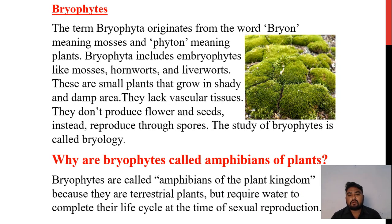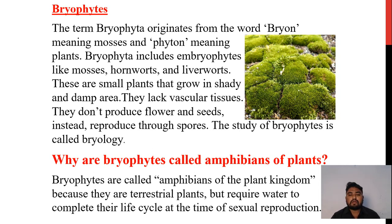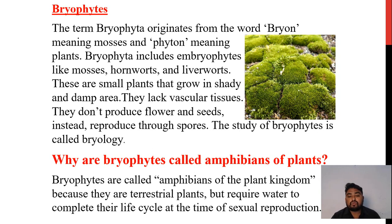The term Bryophytes originates from the word 'Bryon' meaning mosses and 'Phyton' meaning plants. Bryophytes includes embryophytes like mosses, hornworts and liverworts. These are small plants that grow in shady and damp areas. They lack vascular tissues and don't produce flowers and seeds. Instead, they reproduce through spores. The study of Bryophytes is called Bryology.